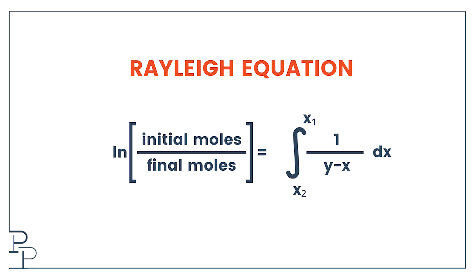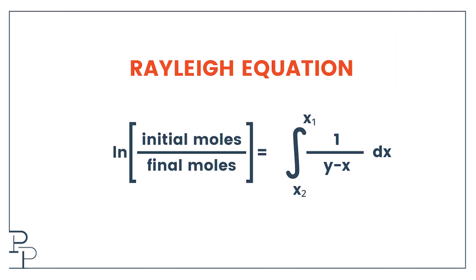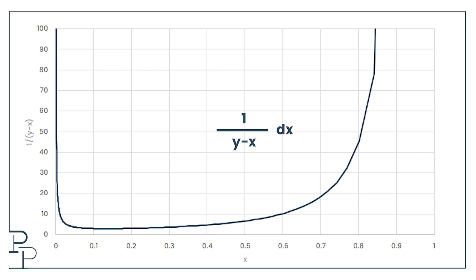The Rayleigh equation describes how the ratio of the initial and final moles of a two component mixture, undergoing a batch distillation, changes as a function of the x,y data we have. For those who are maths-averse, it looks kind of heavy, but really it isn't too bad. All we need to do is plot the function 1 over y minus x as a function of x. That looks something like this. The integral of this is simply the area under the graph.